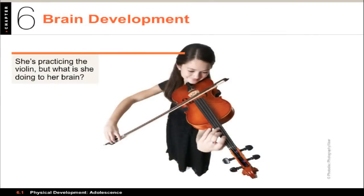Brain development in teens is influenced by natural growth and by differences in usage of brain regions. Teenagers can affect their brain's processing ability by what they learn and practice. Neural connections that are used remain, but those that aren't are lost — a use-it-or-lose-it principle. The frontal lobe of the brain is still immature in adolescence, which can explain why teens sometimes exhibit poor judgment and engage in risky behaviors. This doesn't fully mature until the early 20s.